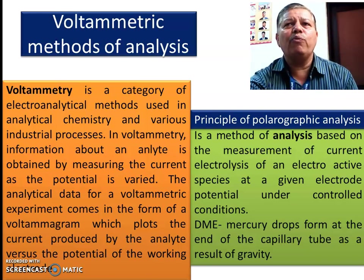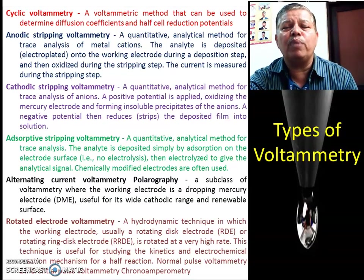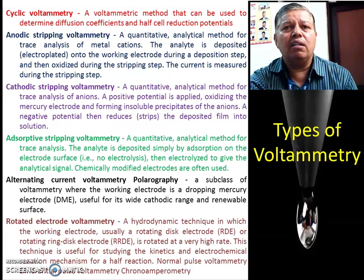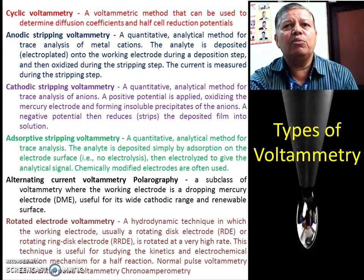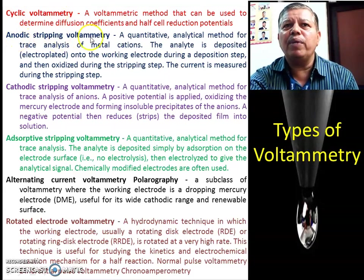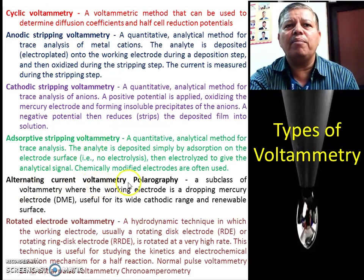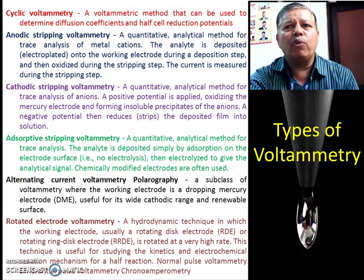In this electrode we use the dropping mercury electrode, which is most important. Voltammetric analysis has different methods such as cyclic voltammetry, anodic stripping voltammetry, cathodic stripping voltammetry, adsorption stripping voltammetry, alternating current voltammetry polarogram, and rotated electrode potential voltammetry.